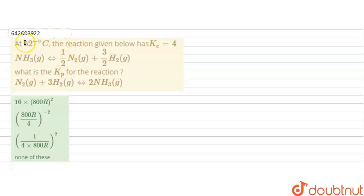Hello students, the question is at 527 degrees Celsius the reaction given below has Kc equal to 4. That is for ammonia gaseous it is going to half N2 plus 3 by 2 H2. What is the Kp for the reaction given N2 plus 3H2 giving 2NH3?